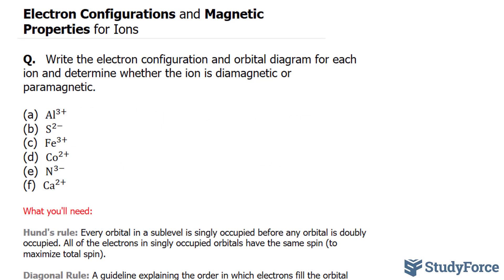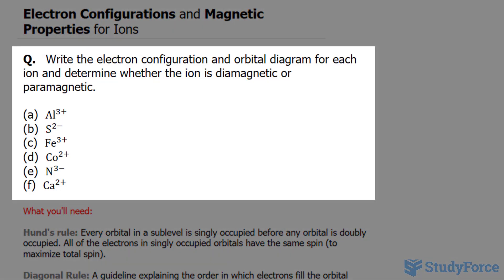In this lesson we'll discuss electron configurations and magnetic properties for ions. The question reads, write the electron configuration and orbital diagram for each ion, and determine whether the ion is diamagnetic or paramagnetic.